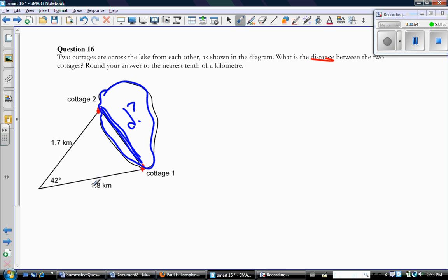Well, we obviously can't use the standard trig relationships, sine, cosine, and tangent, because I don't have a 90 degree angle. And if you don't have a 90 degree angle, you don't have a hypotenuse. So, therefore, I'm either going to use the sine law or the cosine law.